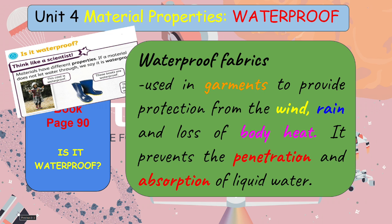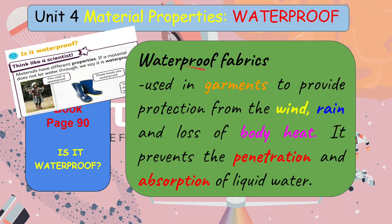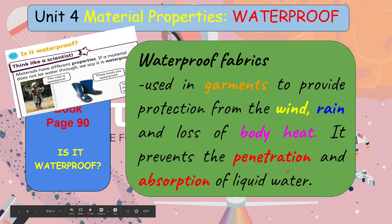If a material doesn't let water through, we say it is waterproof. Waterproof fabrics are designed for use in garments that provide protection from environmental factors like wind, rain, and loss of body heat. It also completely prevents the penetration and absorption of liquid water.